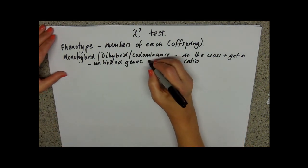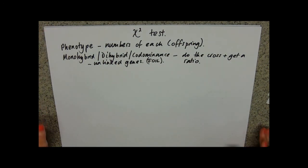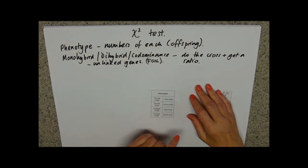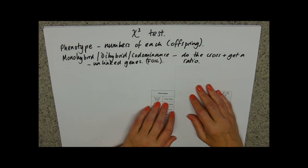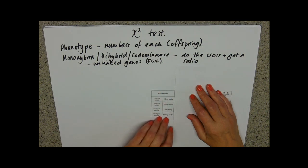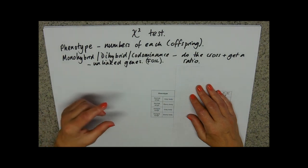We're going to do an example where in our offspring we have four different phenotypes — this is fruit fly data. The phenotypes are: normal wings grey body, normal wings ebony body, vestigial wings grey body, and vestigial wings ebony body. Irrespective of the numbers, you should know your ratios to be either a 9:3:3:1 ratio or a 1:1:1:1 ratio, depending on the information given.